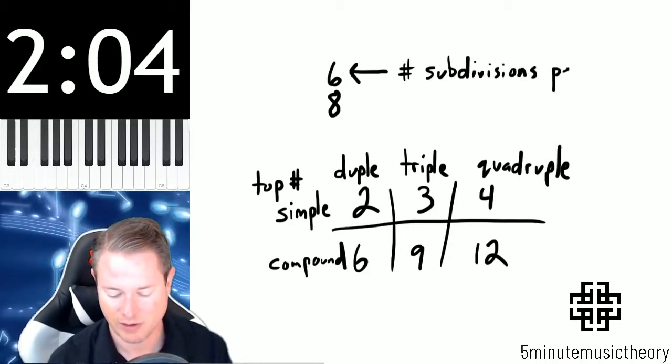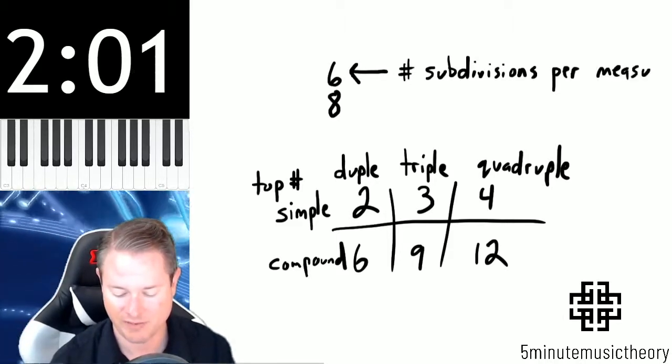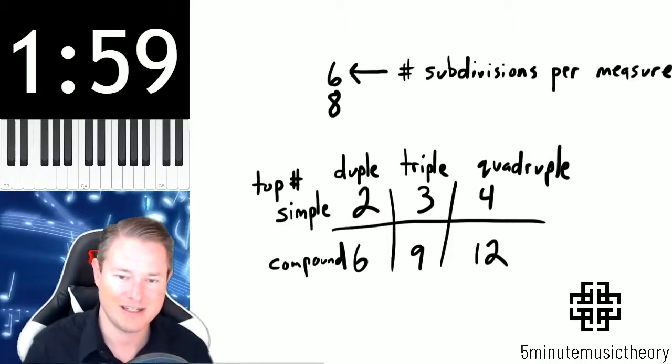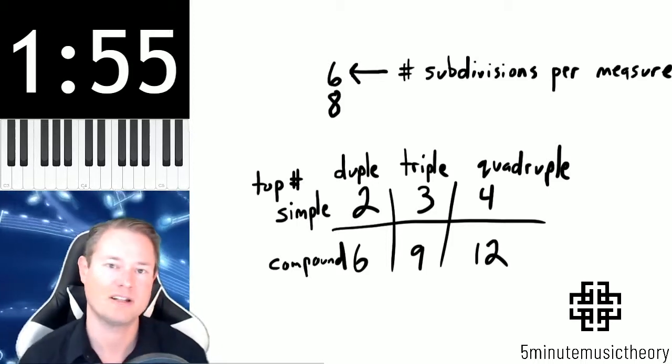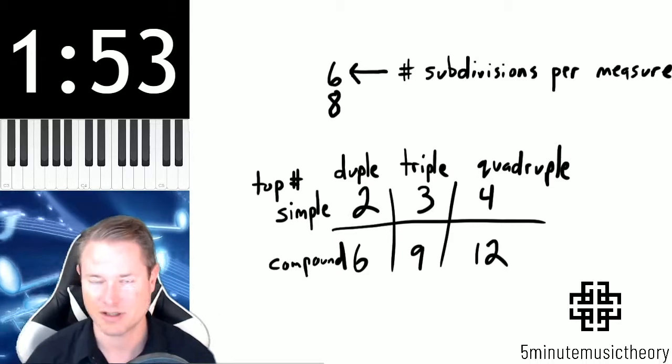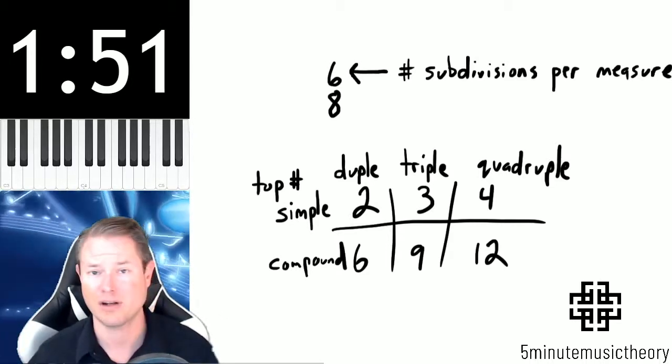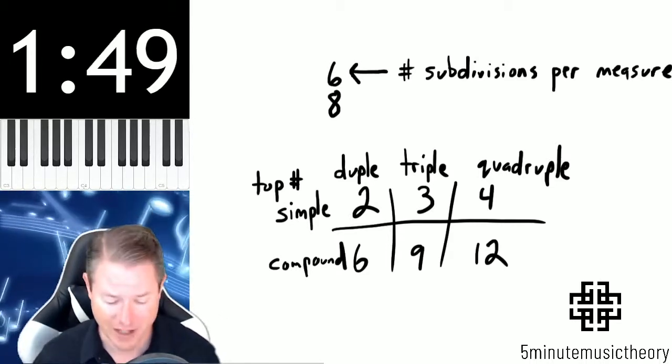Subdivisions per measure. Subdivisions are simply the next quicker note value. Like a subdivision of a quarter note is an eighth note. A subdivision of a dotted quarter note is also an eighth note. It's just whatever the faster value would be.